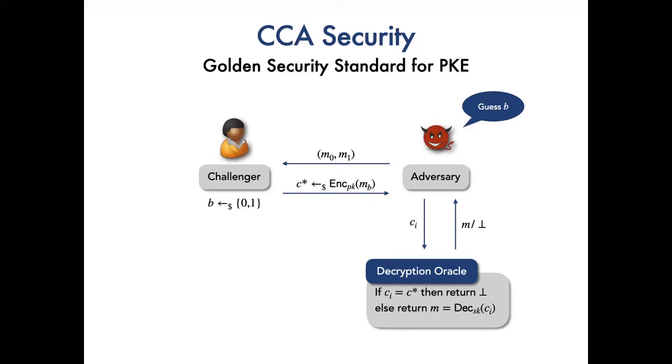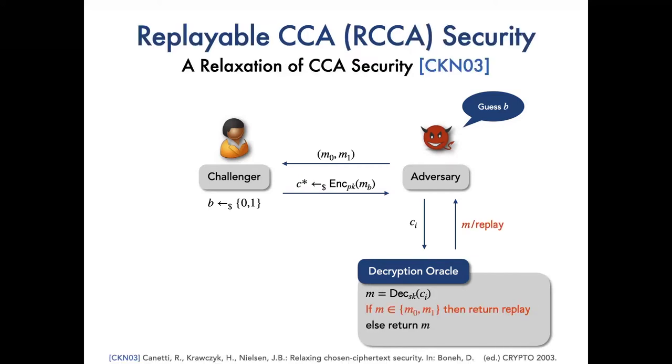However, it is evident that for some practical purposes, a somewhat weaker security notion than CCA security is already sufficient. To this end, Canetti and co-authors introduced the notion of replayable CCA security. RCCA security is the same as CCA security, except that the adversary is allowed to modify a ciphertext into a new one of the same plaintext. So it is a relaxation of CCA security.